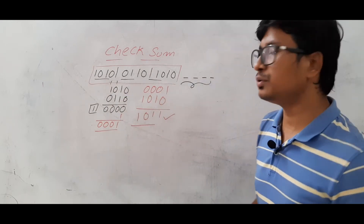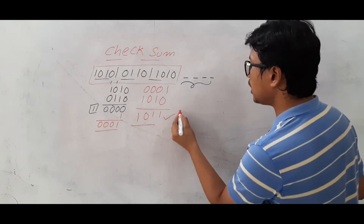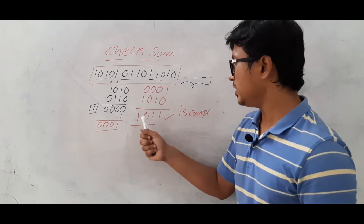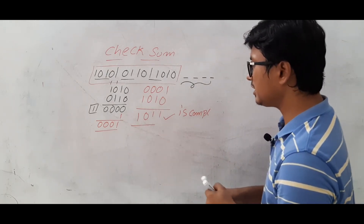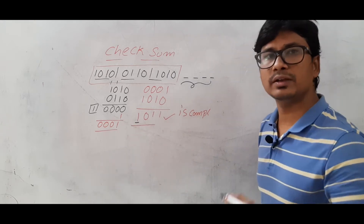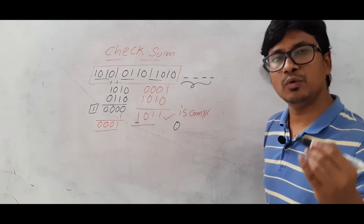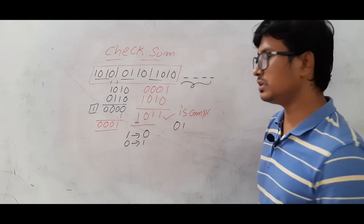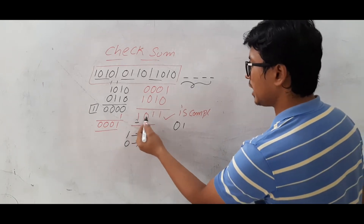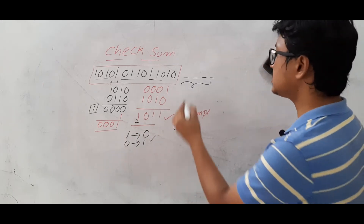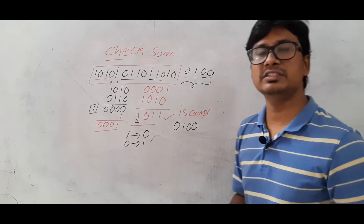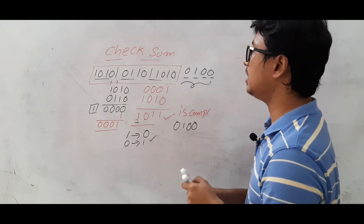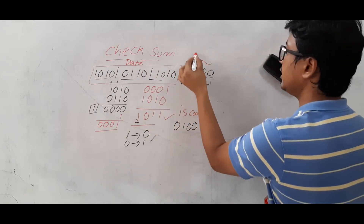Now to find the redundant bits, you take the ones complement of the result 1011. The ones complement simply flips every bit: if the input is 1 the output is 0, and if the input is 0 the output is 1. So the ones complement of 1011 is 0100. This 0100 is the redundant bits that the source sends to the destination along with the actual data via the transmission medium.